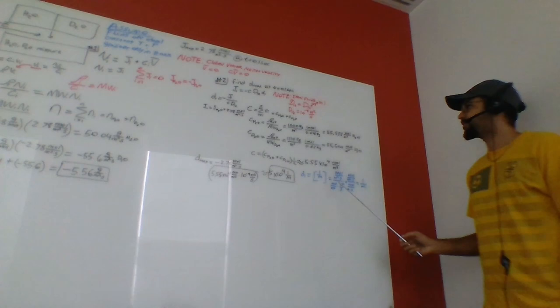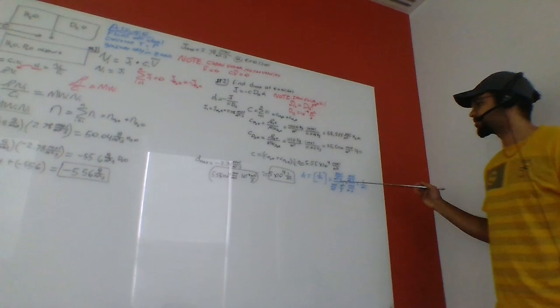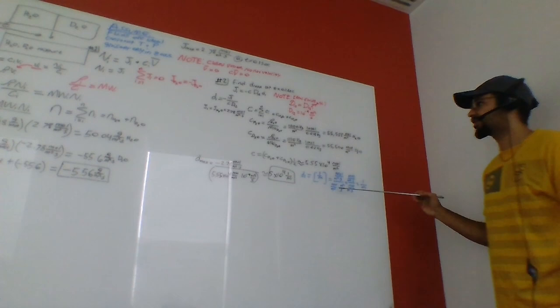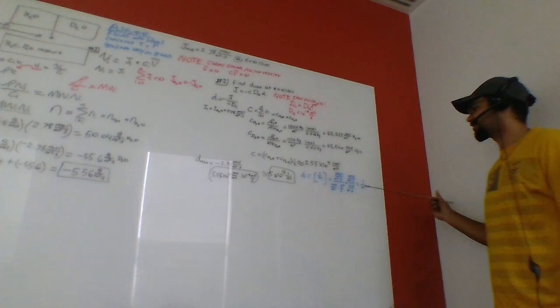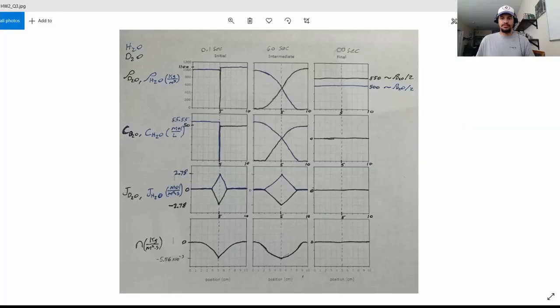The units are one over a meter because the molar diffusive flux in moles per meter squared per second is divided by concentration times fixed diffusivity in moles per meter per second, resulting in one over a meter. That is the answer. For the third problem, we are looking at graphs relating H2O and D2O — specifically mass concentration, molar concentration, molar diffusive flux, and overall mass flux versus distance, at initial time 0.1 seconds, intermediate time 60 seconds, and final time at infinity.